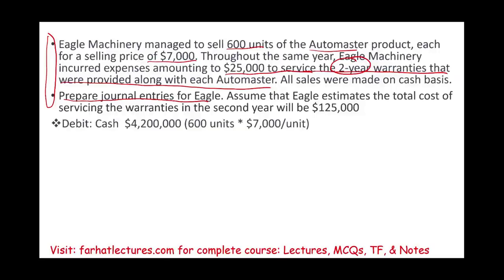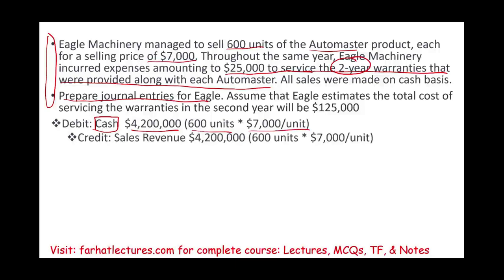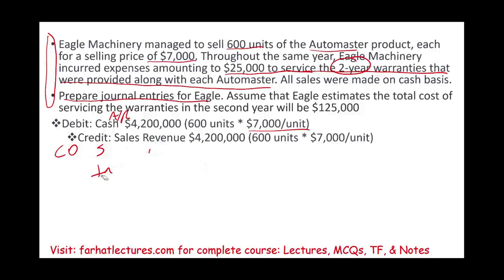First, we start with sales. We're going to debit cash for $4.2 million — we sold 600 units at $7,000 each, and it was for cash, so we debit cash. If it was on credit, we would debit accounts receivable. Then we credit sales revenue $4.2 million. For simplicity, I'm keeping cost of goods sold out, but if we had it, we would debit cost of goods sold and credit inventory — say, $2 million if that were given.